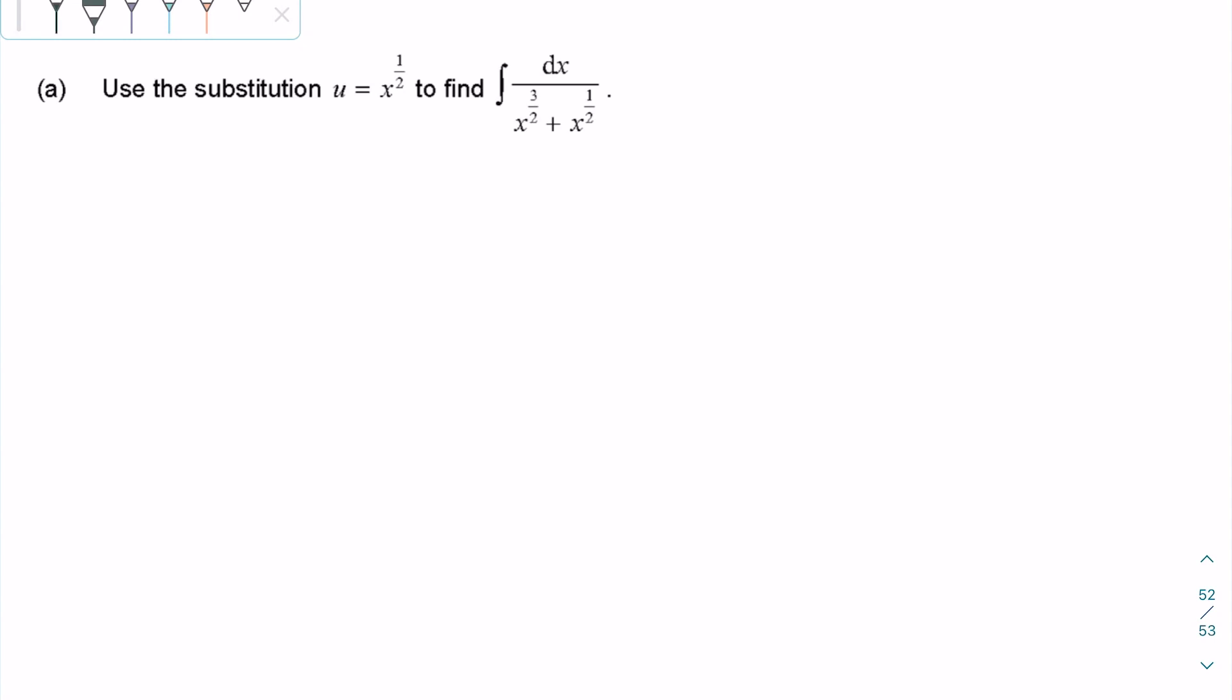Part A asks to use the substitution u equals x to the power of one-half to find this integral. We write u equals x to the one-half, which can also be rewritten as the square root of x.